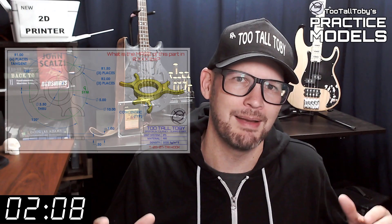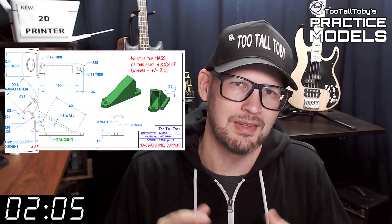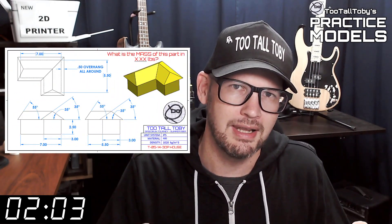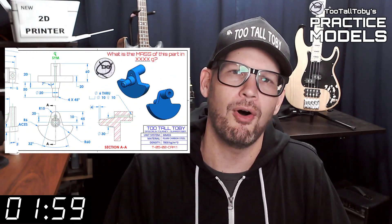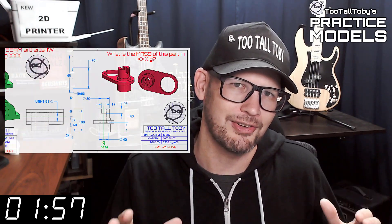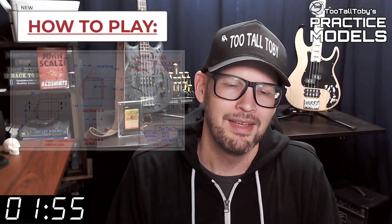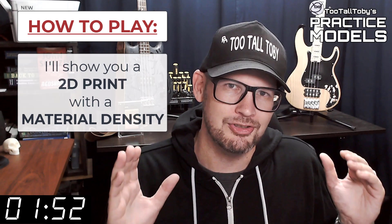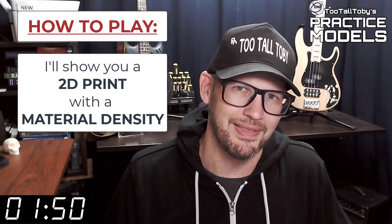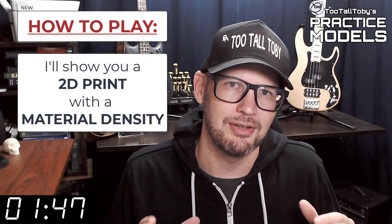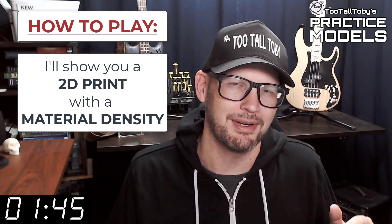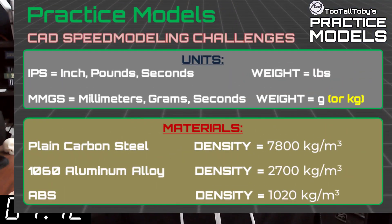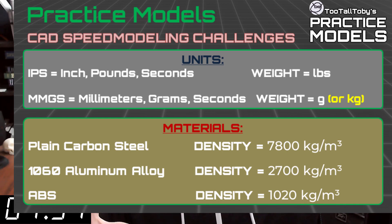If you're here for the first time, welcome. The goal of this video series is to provide you with good quality 2D prints that have all the dimensions and information you need to create a 3D model. On that print you're going to see a material property and a material density — it's going to be one of these three material properties. So take a moment, grab a screen capture of what's on the screen right now and be sure that your materials in your library match these properties.